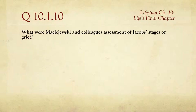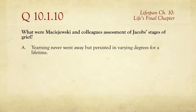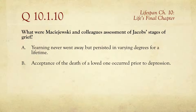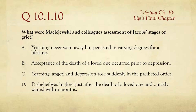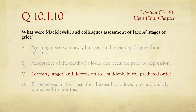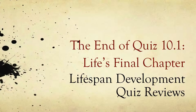The last question: what were Masajewski and colleagues' assessment of Jacobs' stages of grief? Choices include that yearning never went away but persisted for a lifetime; acceptance occurred prior to depression; yearning, anger, and depression rose suddenly in the predicted order; or disbelief was highest just after the death of a loved one and quickly waned. For once, a stage theory was supported. Jacobs said yearning, anger, and depression occurred in that order, and the researchers confirmed they occur rapidly in that predicted order. That is the last question in the first online quiz for Chapter 10, Life's Final Chapter in Psychology 1100 Lifespan Development. Thanks for watching.